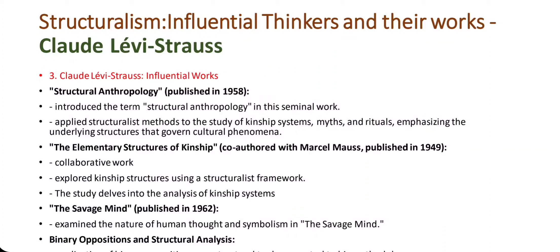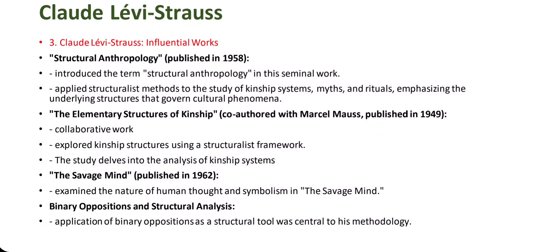Next is The Savage Mind, published in 1962. Lévi-Strauss examined the nature of human thought and symbolism, proposing that human cognition operates according to universal structures and challenging earlier notions of cultural relativism. He also applied binary oppositions as a central structural tool, arguing that cultural phenomena could be analyzed through the identification of opposing pairs, revealing deeper structures of meaning.